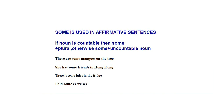For example: 'There are some mangoes on the tree' — affirmative sentence, some plus plural countable noun. 'There are some threads in Hong Kong' — some plus plural countable noun. 'There is some juice in the fridge' — some plus uncountable noun. 'I did some exercises' — some plus plural countable noun.